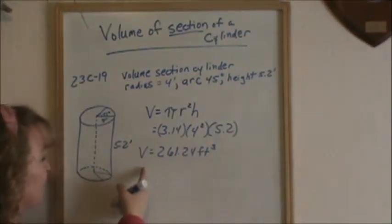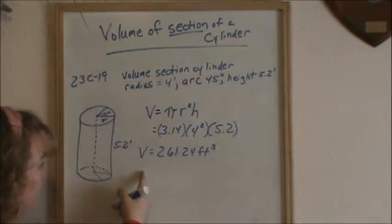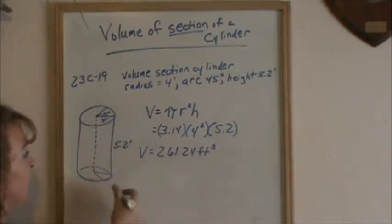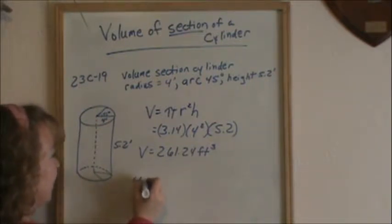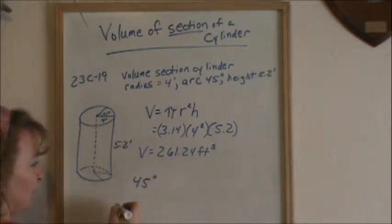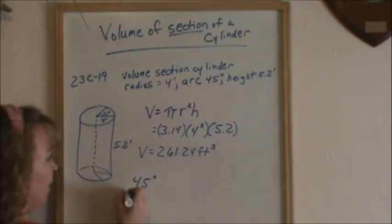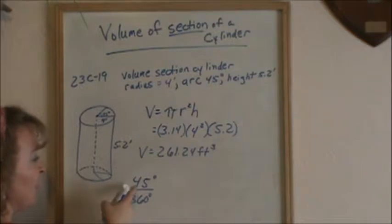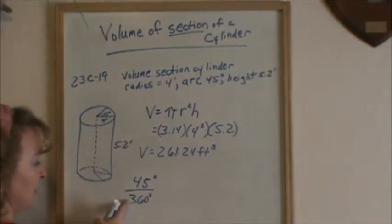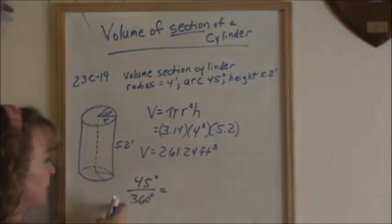So we know the total volume, but we don't want the total volume of the cylinder. We only want 45 degrees section of the cylinder. So therefore, we have to find out what fraction is that section of a circle. So you take the part over the whole. We are wanting a 45 degree section, but a whole circle is 360 degrees. So you reduce this fraction.